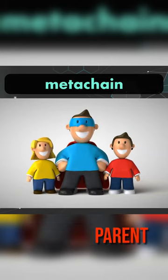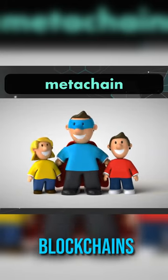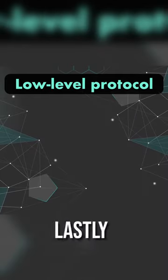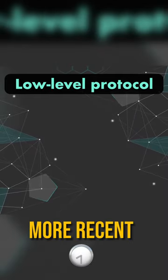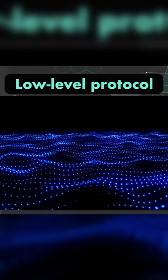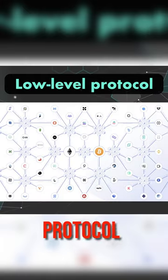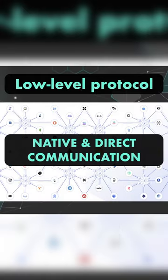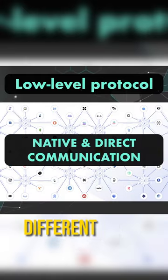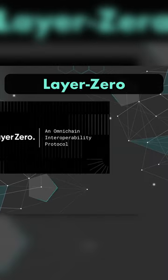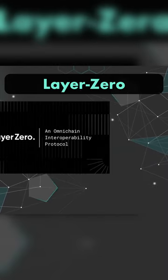Or you can use a meta chain, where a parent blockchain stands in between two networks. Lastly, we've got the more recent low-level messaging approach, in which the protocol provides native and direct communication between different blockchains.